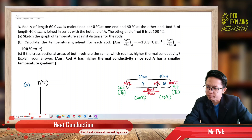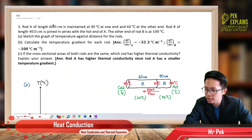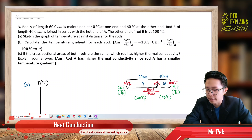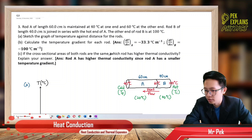First, we draw out the diagram showing the combination of rod A and rod B. Rod A is 60 cm long with temperatures 40 degrees Celsius at one end and 60 degrees Celsius at the other. Rod B is only 40 cm, so it is shorter than rod A.